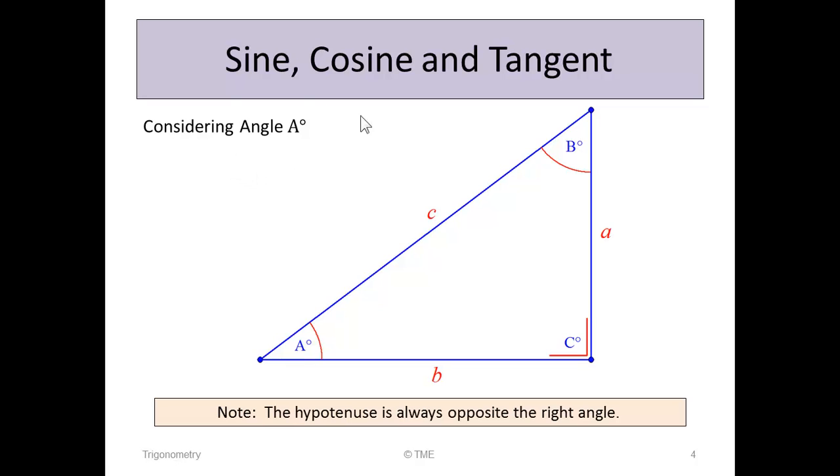Let's consider angle A. The angle A in this triangle is on the bottom left-hand side, and the 90-degree angle is on its right. Remember that once you have a 90-degree angle, it's a right-angle triangle, and the hypotenuse will be opposite the 90-degree angle.